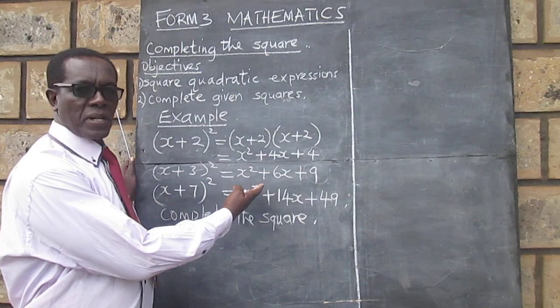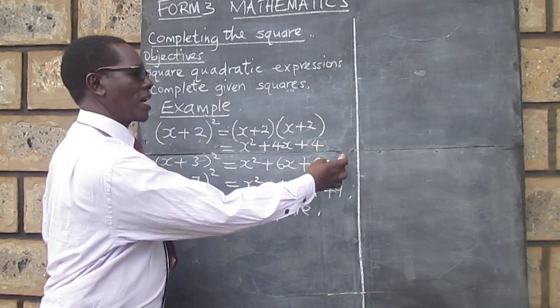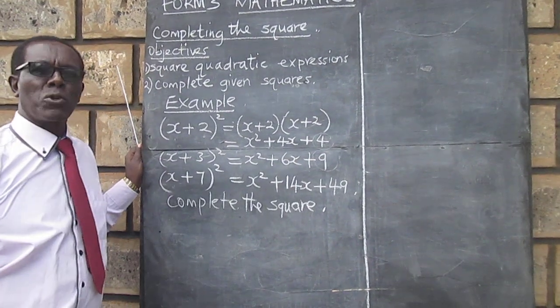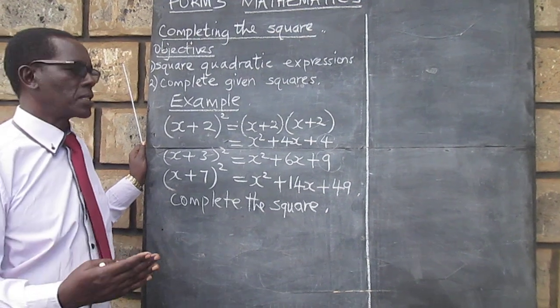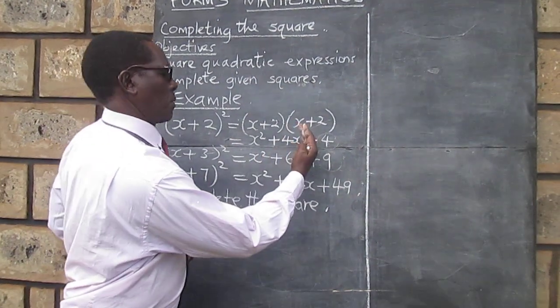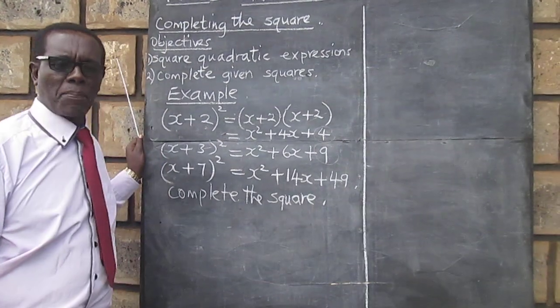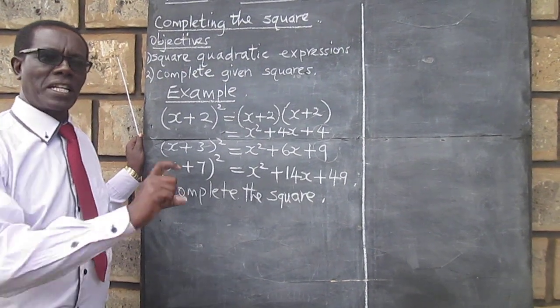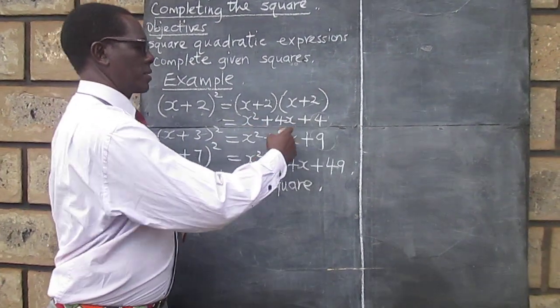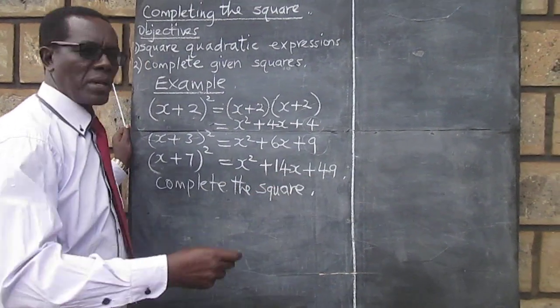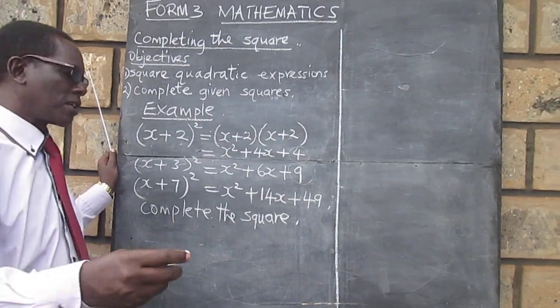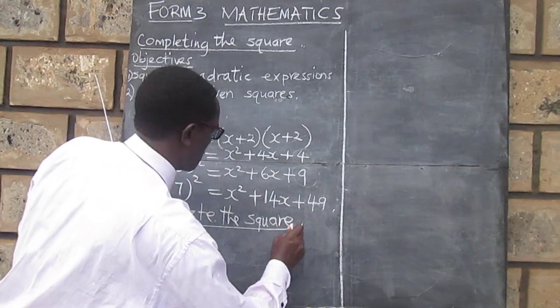We will be given the same expressions, but without the last part. Because completing the square means working out the last part of an incomplete square. These are squares. So, we can make the squares incomplete, and then complete them.